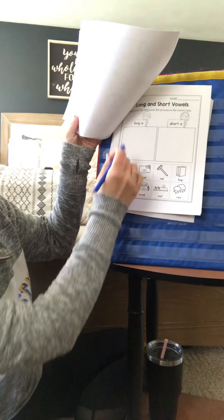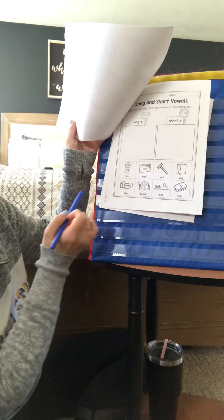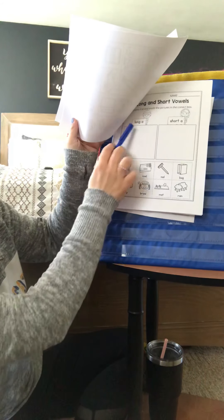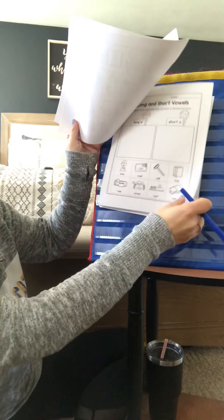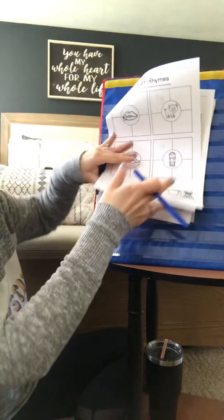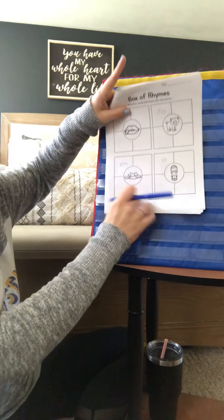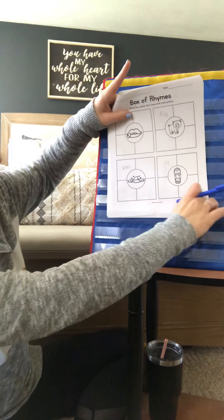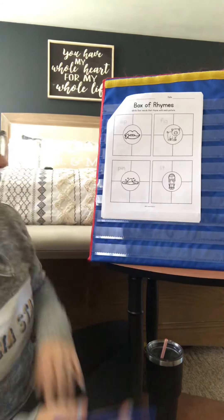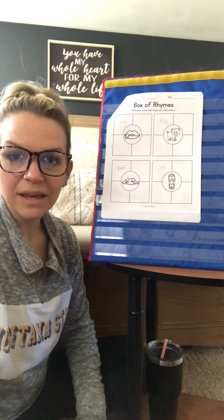We have the long A and the short A. So A and A. I wanted to look at this one — you may have done this one yesterday. It's the first rhyming page in your packet.